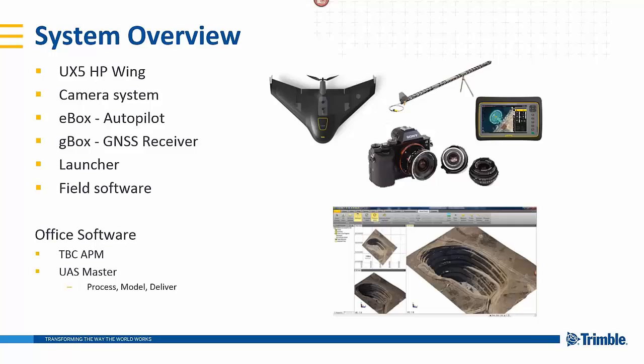The Trimble UX5HP is considered the best and most advanced aircraft in the Trimble UAS portfolio, offering the very best in overall accuracy and capability. The system overview includes the aircraft wing, the onboard sensor which is the camera, the G-Box or GNSS receiver, the E-Box which is the onboard autopilot or control system, a launcher and field software known as the ground control station, and office software. You have a choice of either TBC Aerial Photogrammetry or UAS Master, and we'll talk more about the differences between those later.